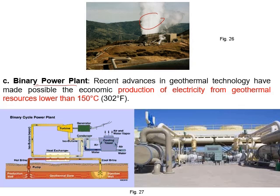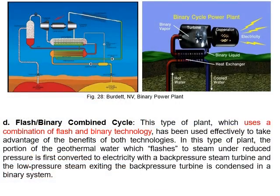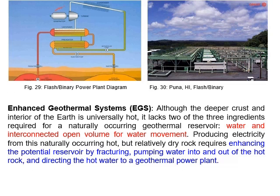Binary power plants are used when the geothermal reservoir temperature is lower than 100°C — the boiling point of water. We use a heat exchanger and another fluid that can vaporize at lower temperatures. The hot water transfers heat to this secondary fluid via a heat exchanger; the fluid vaporizes, rotates a turbo generator, and returns back. In a flash-binary plant, both approaches are combined: water directly produces steam to rotate one generator, and the returning water feeds another heat exchanger to produce additional steam.